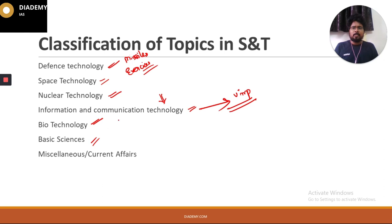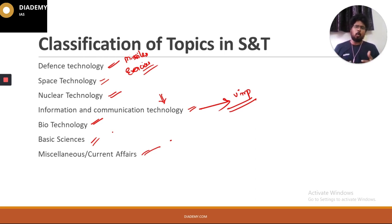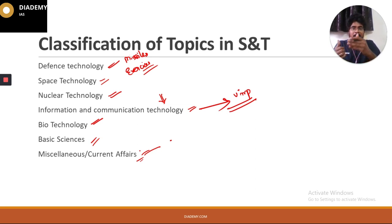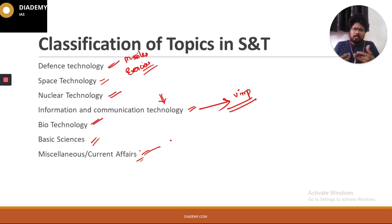After ICT, we have biotechnology, basic sciences, and current affairs. UPSC is not asking all the basics of science — mostly the questions are based on technological aspects and current affairs. Under current affairs, we will focus on the applications of various technologies developing day by day, such as AMOLED displays, quantum dots, and other emerging technologies.